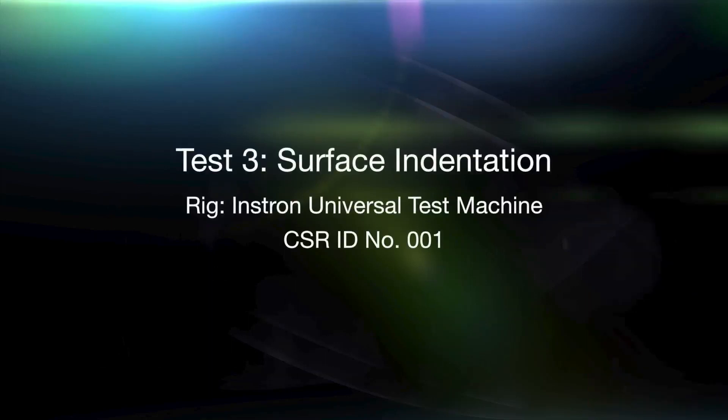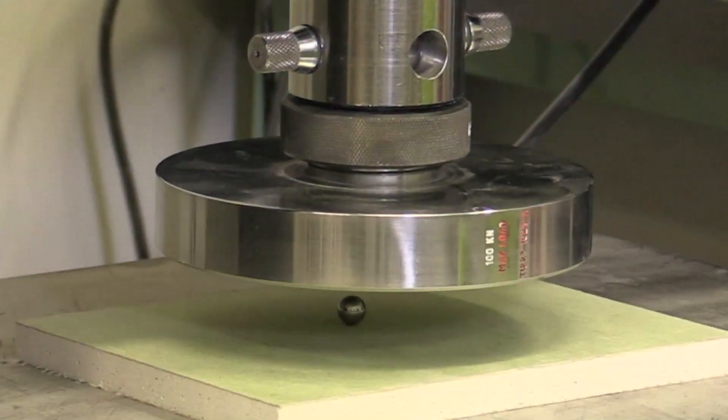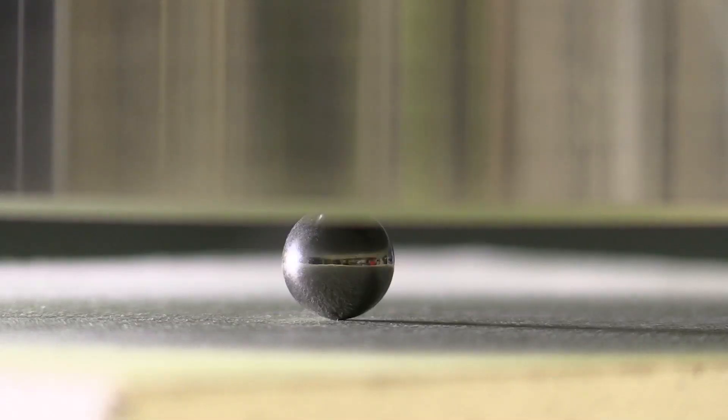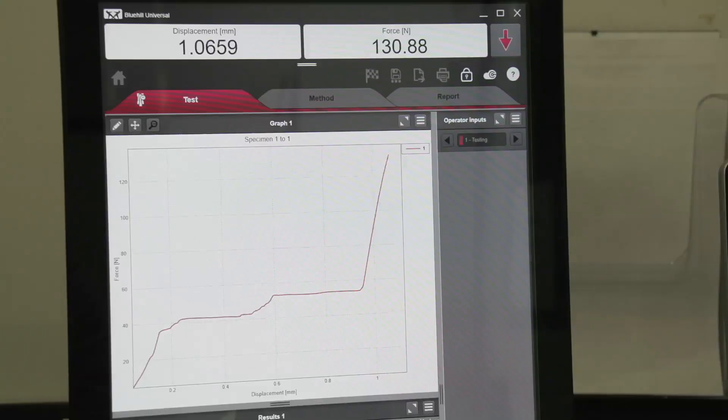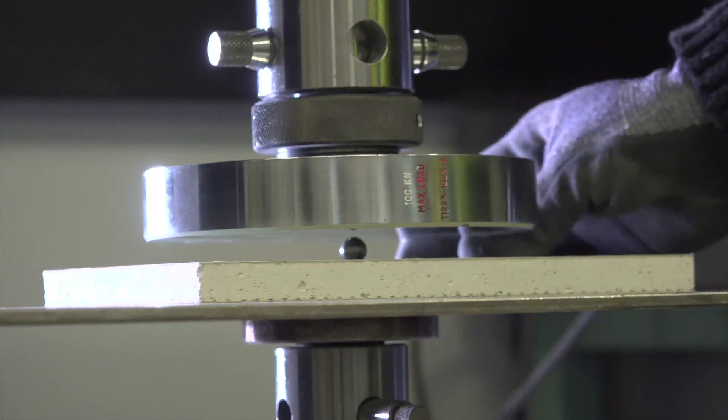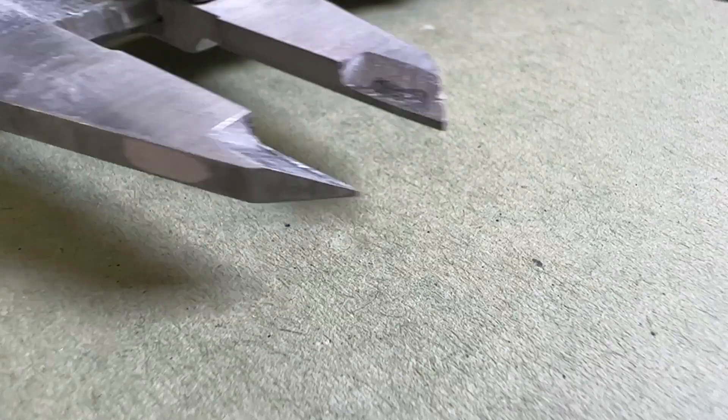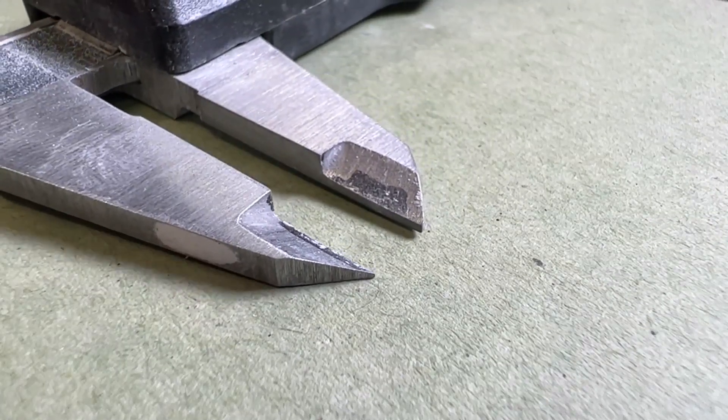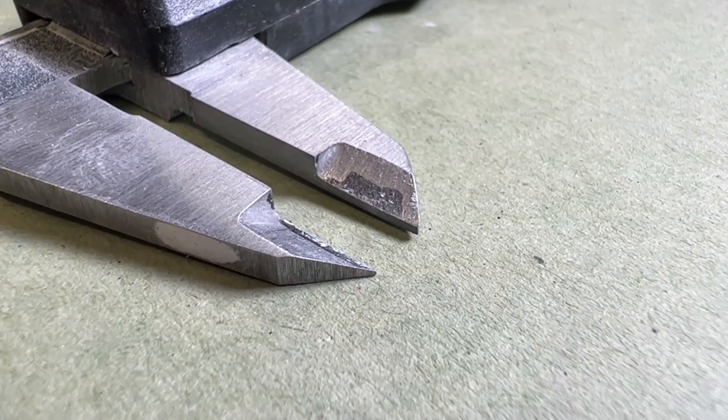The third test is for indentation resistance. A 10mm ball bearing is pressed against the surface of a sample at a compression rate of 1mm per minute until a load of 150N is reached. This load is held for 5 minutes. The diameter of the resultant indentation is measured and compared between samples. The lower the measure, the better the result.